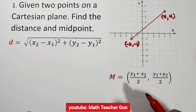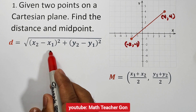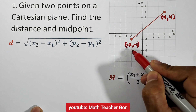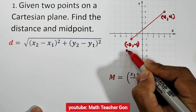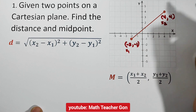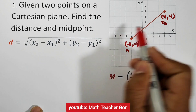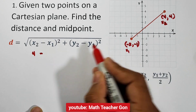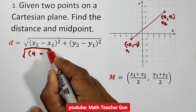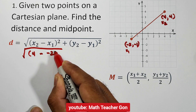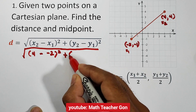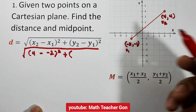Now let us substitute all the values into the formula. We have x_sub1 is negative 2 and x_sub2 is 4. So x_sub2 minus x_sub1 is 4 minus negative 2, squared. Then y_sub2 is 4 from the second point and y_sub1 is negative 1 from the first point, so y_sub2 minus y_sub1 is 4 minus negative 1, squared.